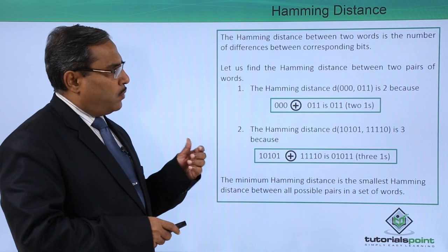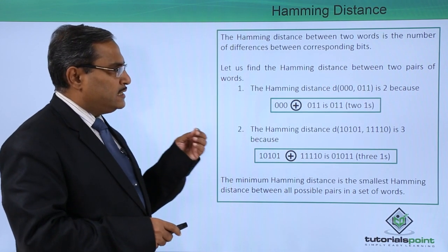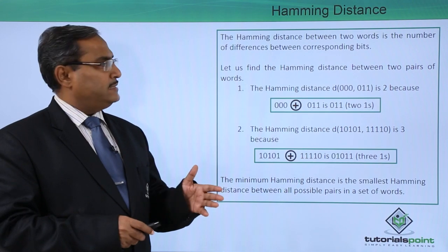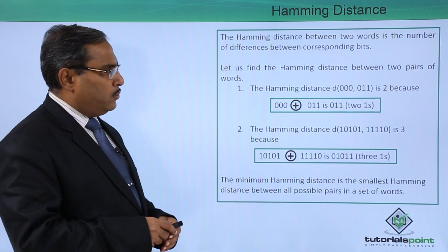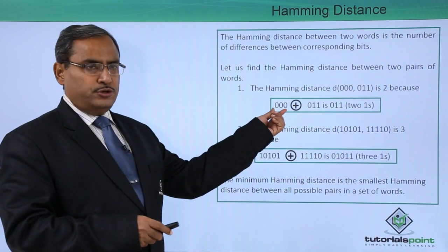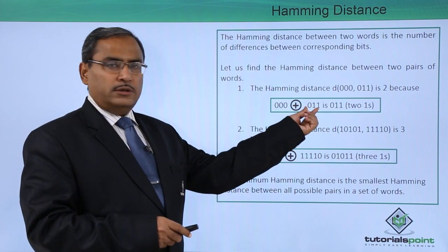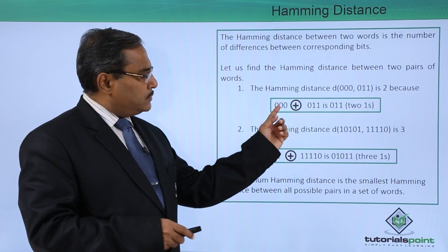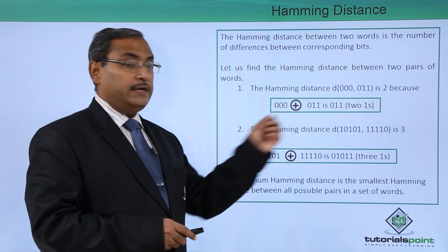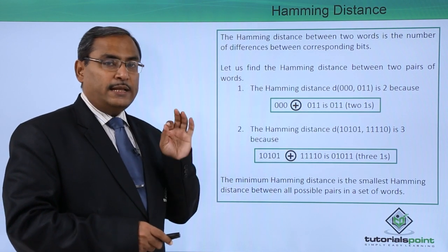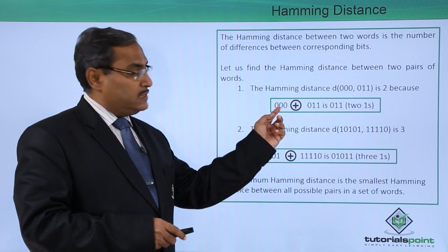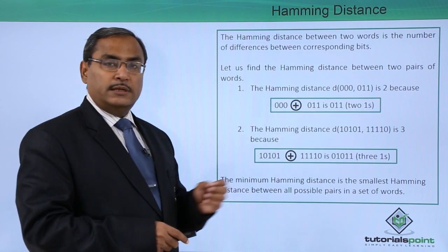The Hamming distance between two words is the number of differences between corresponding bits. Let us find the Hamming distance between two pairs of words. Here is one word, 000, and there is another word, 011. The first zero is matching, but the second zero is not matching and the third zero is not matching. That is, in two places the bits have changed, so the Hamming distance between this pair of words will be two.